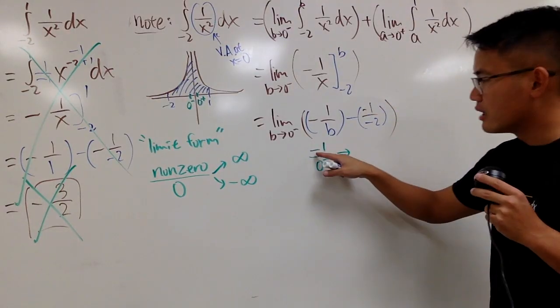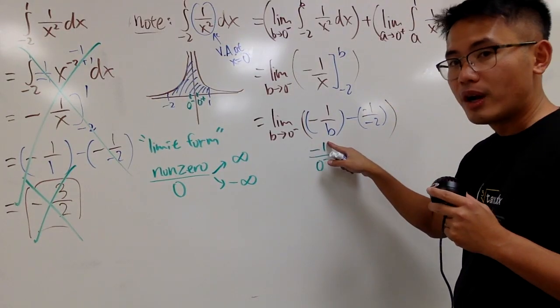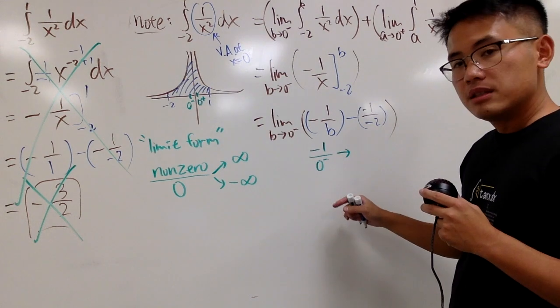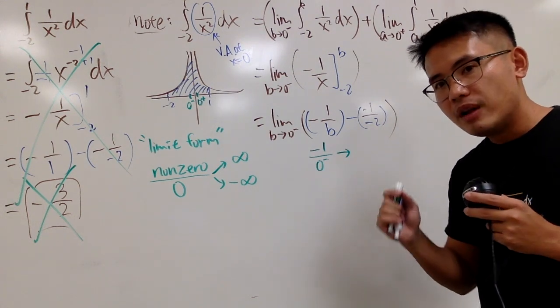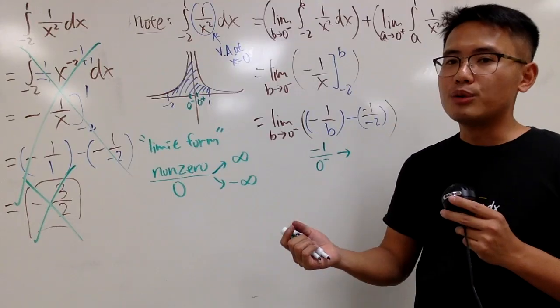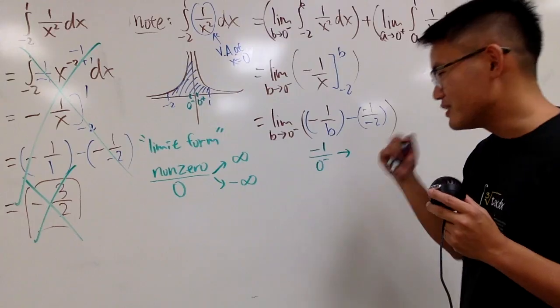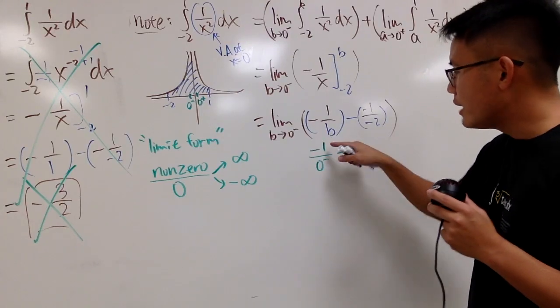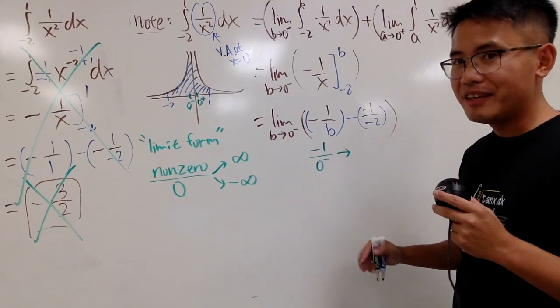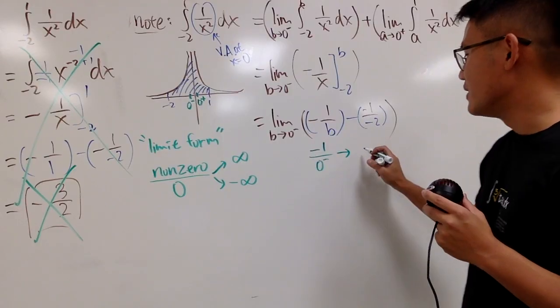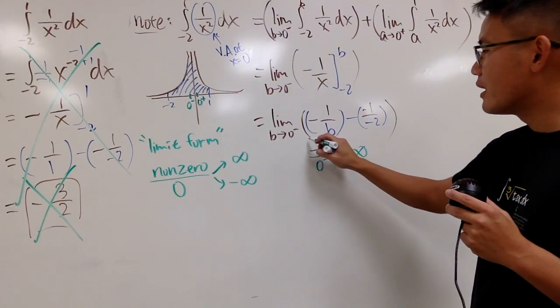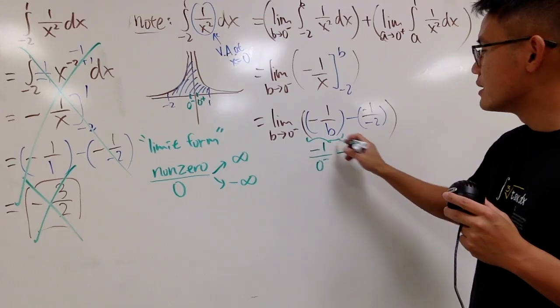So, now, let's just work out the sign. Here, you have negative 1 on the top. So, it's negative. 0 minus means a number that's just a little bit less than 0, such as negative 0.00001. You can just imagine like that. Anyway, negative divided by negative, you end up with positive infinity. So, this right here approaches positive infinity.